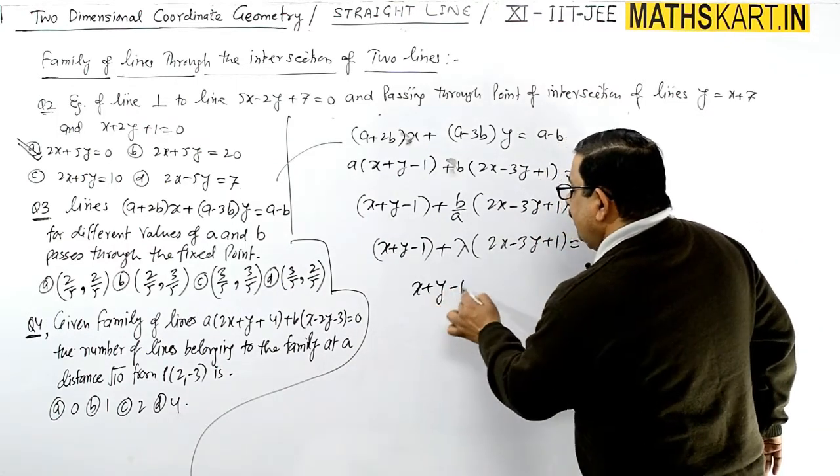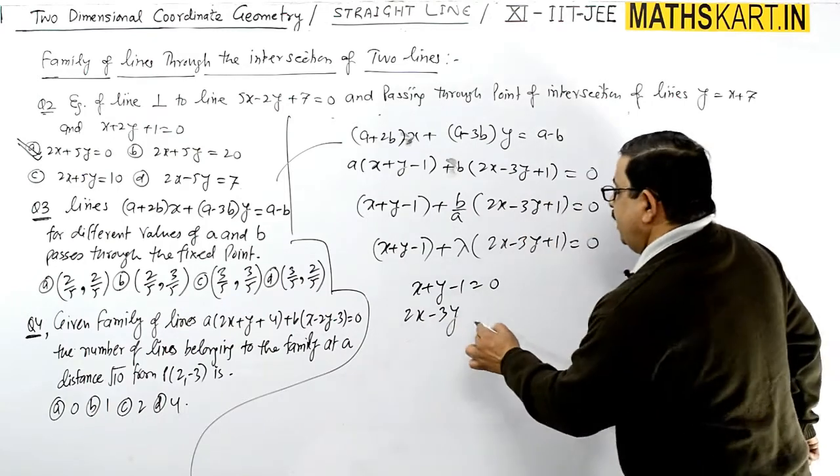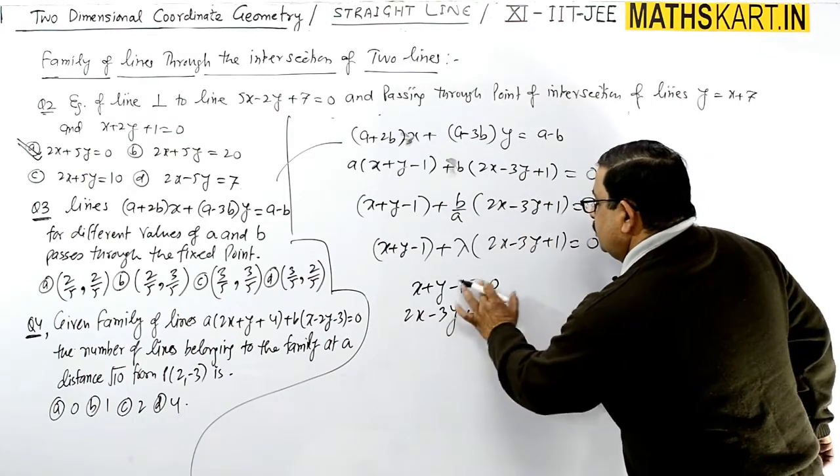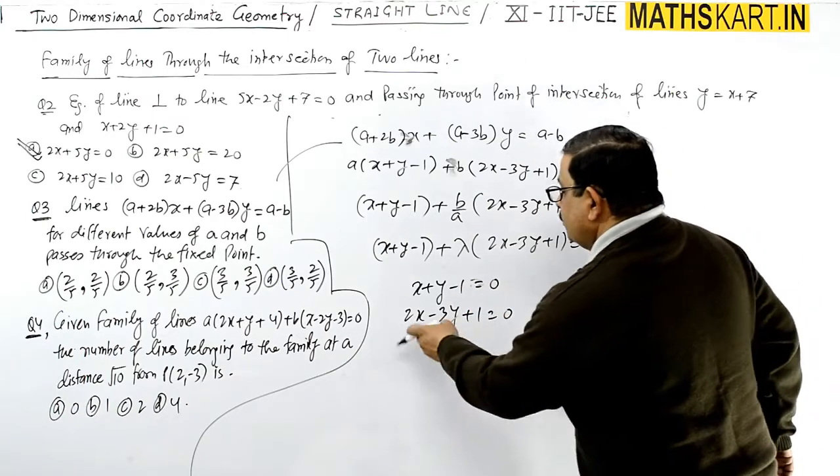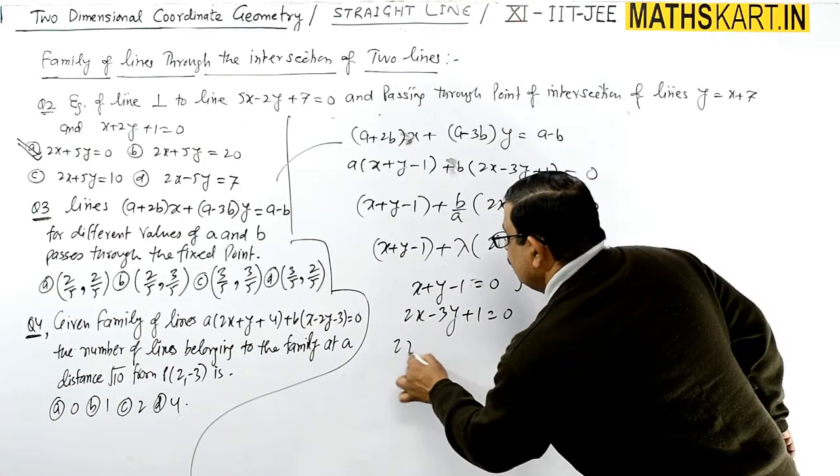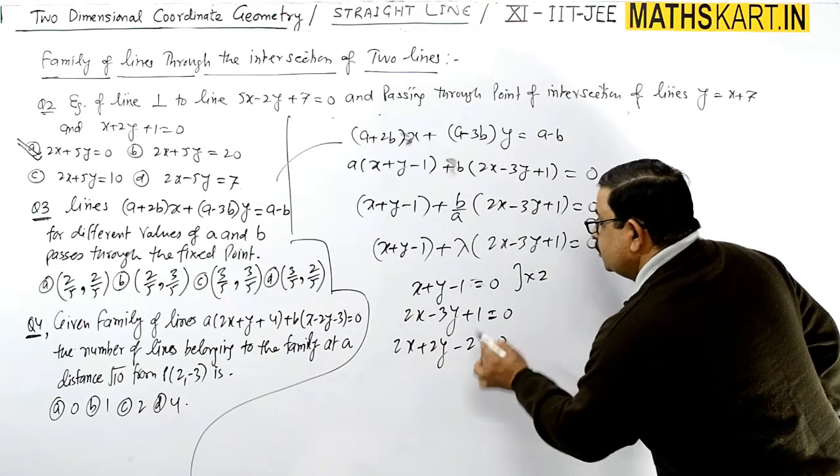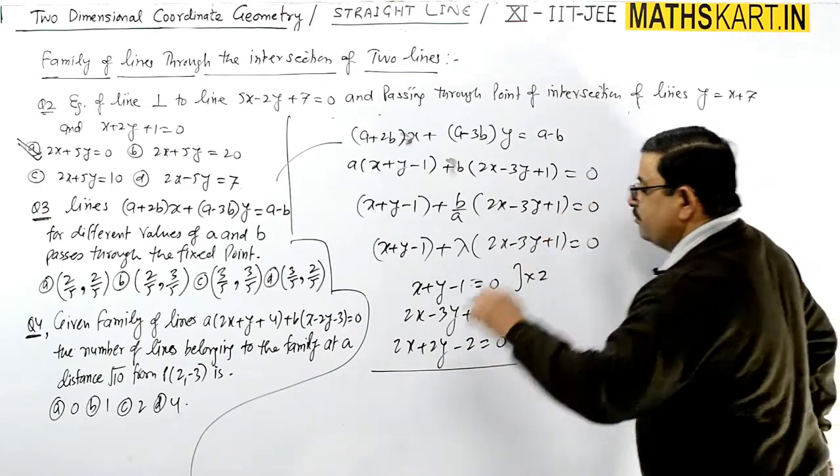x+y-1 = 0, and 2x-3y+1 = 0. We can multiply the first by 2, giving 2x+2y-2 = 0. Subtract the equations.